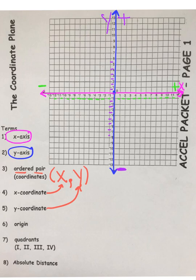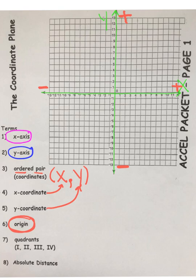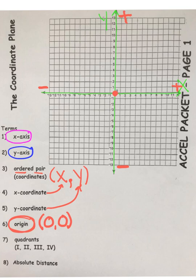Let's take a look at an important term here: the origin. You've heard me mention it several times already, but the ordered pair that represents the origin is zero, zero. It is located right here where the x and the y intersect. When you're plotting points, you should always place your pencil at the origin and start there. The x-coordinate will control your movement to the left or to the right, and your y-coordinate will control your movement either up or down.